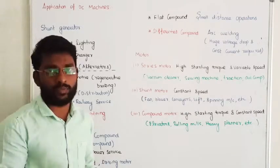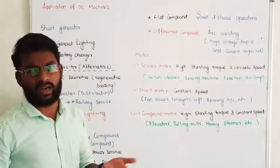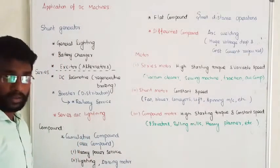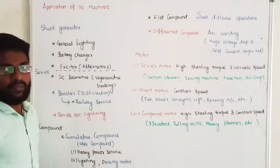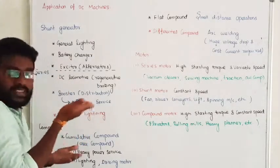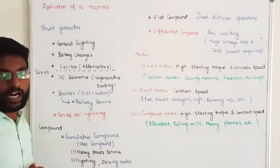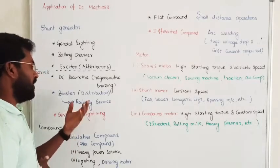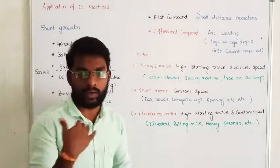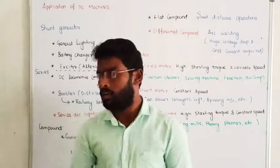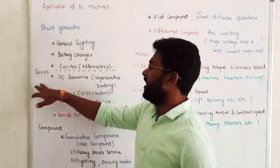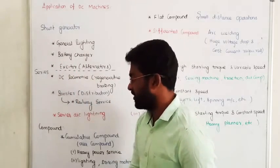Along distribution feeders and transmission lines, voltage drops occur in our transmission lines. In such a case, with the help of a DC Series Generator, we can compensate the voltage drops in our transmission lines. We can compensate high voltage drops with the help of Series Generators.